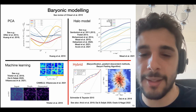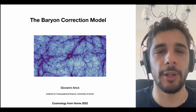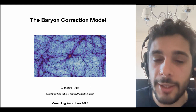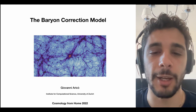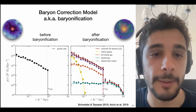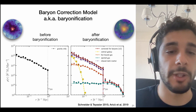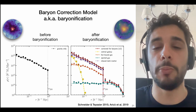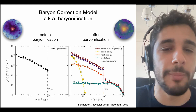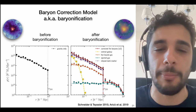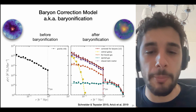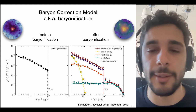I will focus specifically on the Baryonic Correction Model (BCM), originally proposed by Schneider & Teyssier in 2015, but I'll explain a re-implementation I developed with collaborators in 2019. The BCM takes gravity-only N-body simulations in post-processing and puts baryons on top. Before baryonification, halos contain only gravity-only matter; after baryonification, particles are displaced and tagged with different components — giving different density profiles.